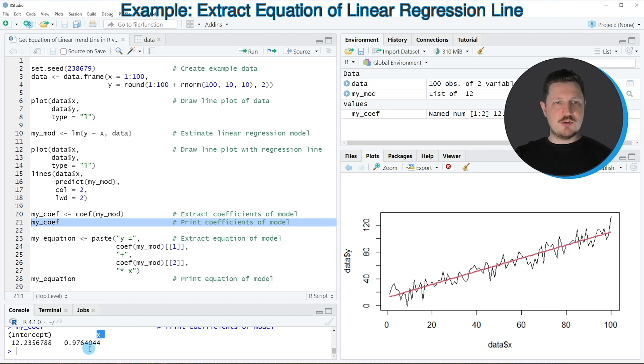If we want to convert these data into the equation of our trend line, we can apply the code in lines 23 to 27. In these lines I'm using the paste function, then once again the coef function and our model object, and I'm pasting this together with a plus sign and other components of our equation. Then I'm storing the output in a new data object called myEquation.